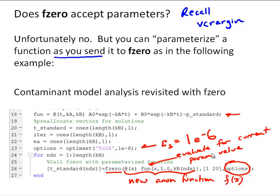And those current parameter values for this, each iteration is 1.0, which is the value of Ka, and the index value of Kb. If you recall back to this example, this is that same contaminant model analysis that we've been talking about. What we're doing here is looping through various values of the parameter Kb and calling fzero for each of those values.